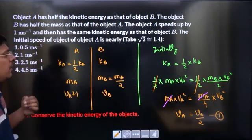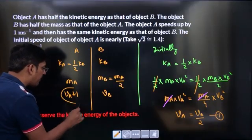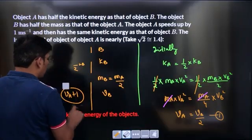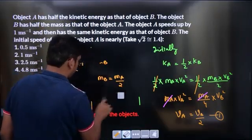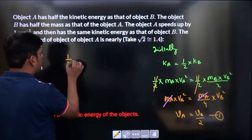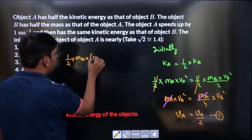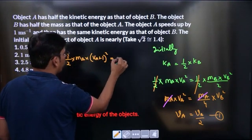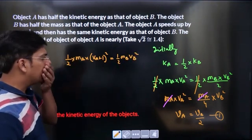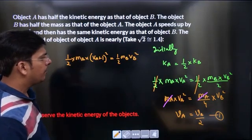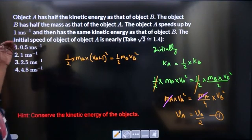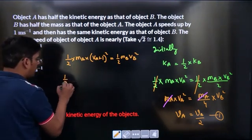Now let us take the other option. They are saying that if VA is increased by 1 unit both objects will have the same kinetic energy. So half mass of A, VA is increased by 1 unit, equals half mass of B into VB square. Now MB was, B has half the mass as that of A.